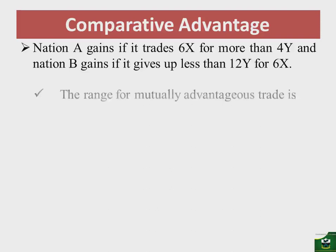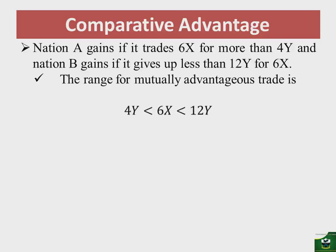The mutually advantageous range is: 4Y must be less than 6X, which must be less than 12Y. This range tells us that for both nations to gain from trade, the exchange must fall within this range. If there is an equal sign, it means there is no gain for one of the nations.